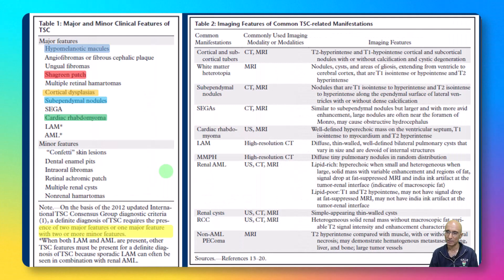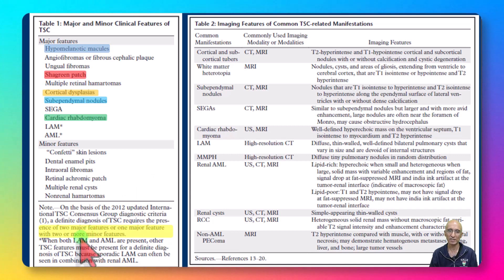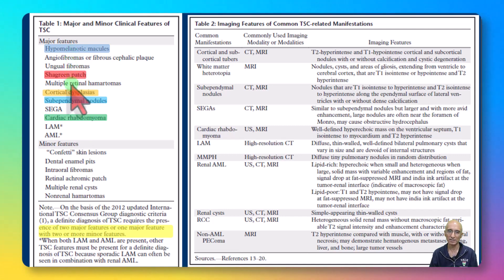These are the imaging findings of tuberous sclerosis across various organs. In terms of diagnosis, we need two major features, or one major feature and two or more minor features. Our patient had hypomelanotic macules, shagreen patch, cortical dysplasia, sub-ependymal nodules, and cardiac rhabdomyomas.